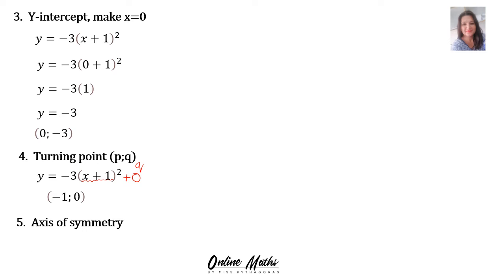And then the axis of symmetry is the x of the turning point. Therefore x is equal to minus 1. Now our graph.